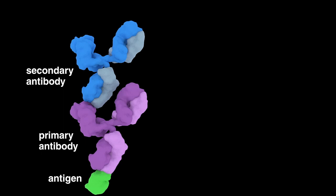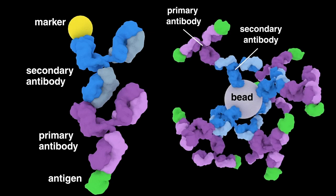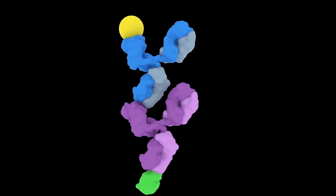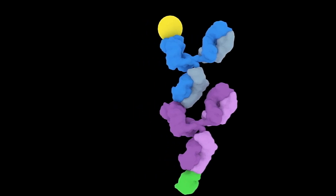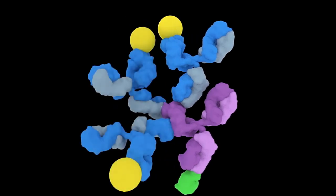Depending on the application, secondary antibodies might be conjugated to a marker or bead, which allows for easy detection or isolation of the protein of interest. The use of a secondary antibody leads to amplification in signal, since multiple secondary antibodies can bind to a primary antibody.